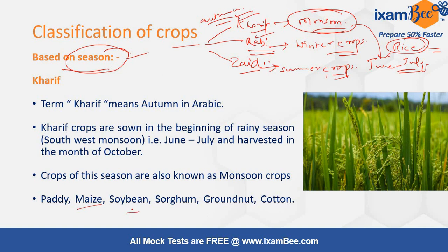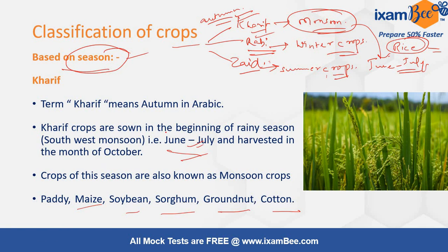Kharif crops include maize, soybean, rice (paddy), sorghum, groundnut, and cotton. These crops are all grown in the month of June and July. The sowing is done at this time and then they are harvested around 3 to 4 months later, that is during the month of September and October.